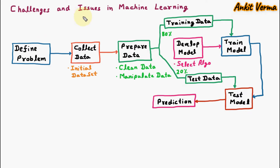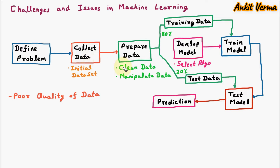There are various challenges and issues in machine learning. The first challenge is poor quality of data. When we initially collect the data, that data is inaccurate and incomplete — there are so many errors in it. Because of that, cleaning and manipulation is required to prepare the data. This is a challenge in machine learning.